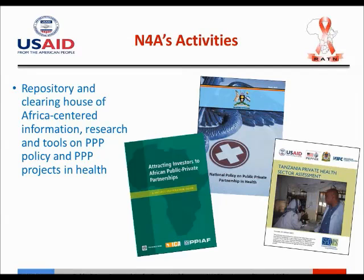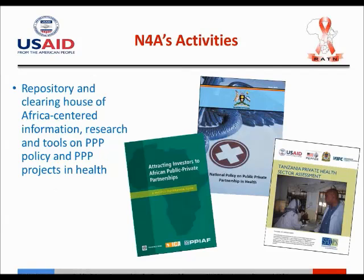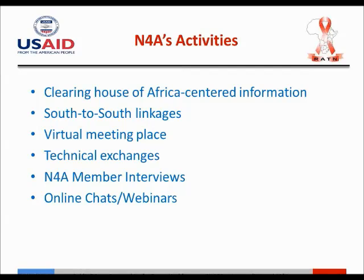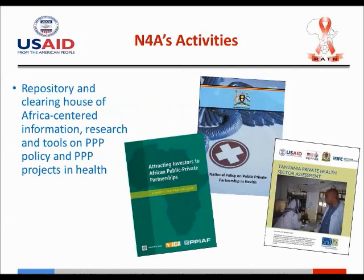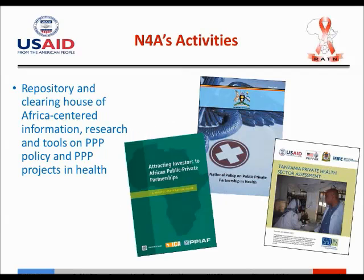Network for Africa is a repository and clearinghouse of Africa-centered information and research that includes PPP policy and PPP projects in health. This is where people interested in learning more about health PPPs in Africa, and who want to get the tools used in initiating and running PPP initiatives, can log on and access the resources.